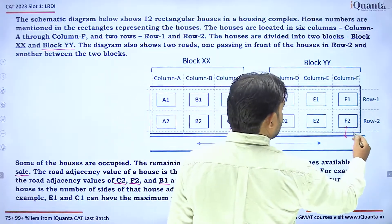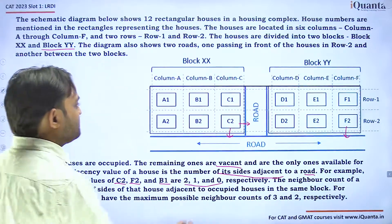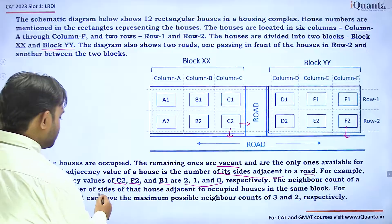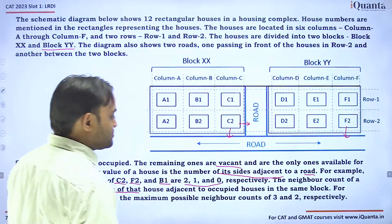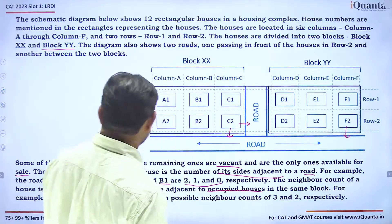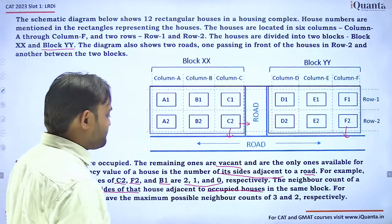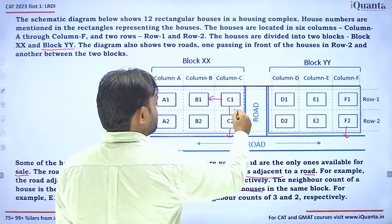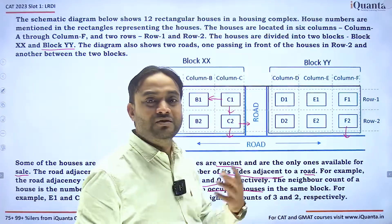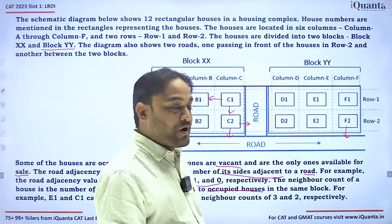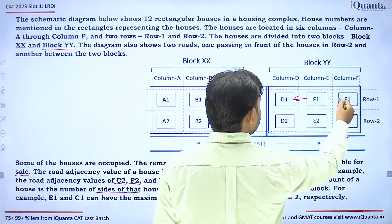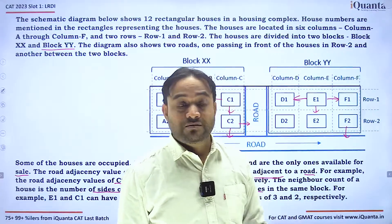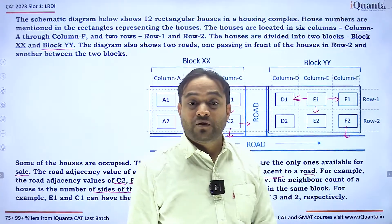F2 has only one adjacent road, so its road adjacency value is 1, and B1 has no adjacent road so it's 0. The neighbor count of a house is the number of sides of that house adjacent to occupied houses in the same block. For example, E1 and C1 can have maximum possible neighbor counts of 3 and 2 respectively — C1 has two adjacent sides, while E1 can have up to three neighbors.